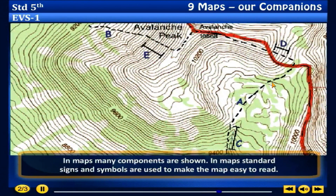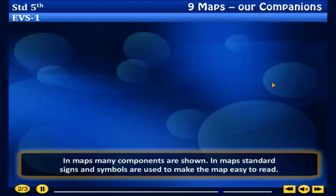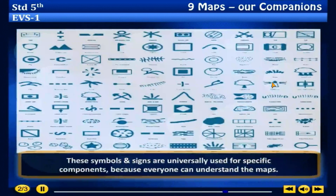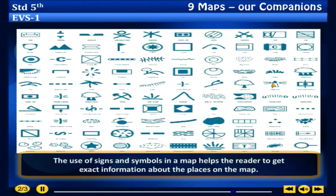In maps, standard signs and symbols are used to make the map easy to read. These symbols and signs are universally used for specific components so that everyone can understand the map. The use of signs and symbols helps the reader to get exact information about the places shown on the map.